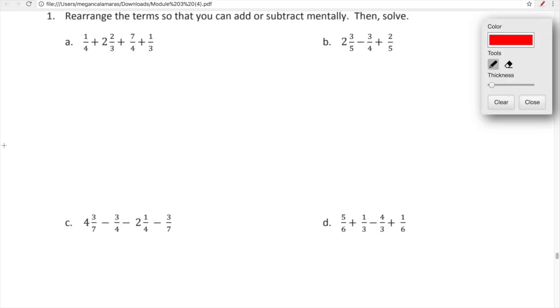I'm going to spend some time here working with a variety of problems and just using those amazing skills that we've been gathering throughout modules one, two, and three. First let's look at A where we are to rearrange the terms so that you can add or subtract mentally. So rearranging means just moving the numbers around, right? Let's rearrange the numbers. We have 1/4 + 2 2/3 + 7/4 + 1/3. Let's rearrange the numbers so that our common denominators are right next to one another.